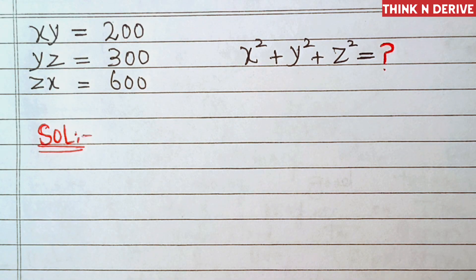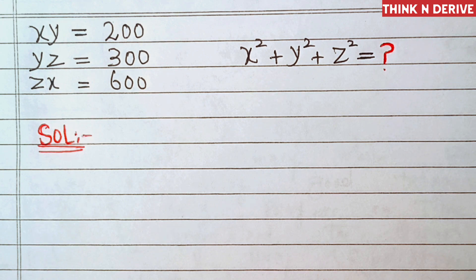Hi dear friends, we have xy equal to 200, yz equal to 300, and zx equal to 600. We need to find the value of x square plus y square plus z square.